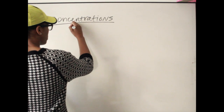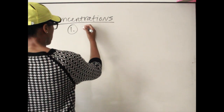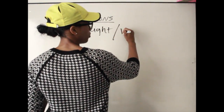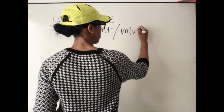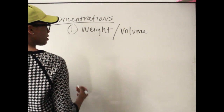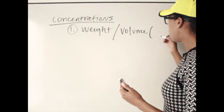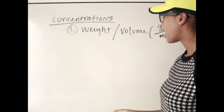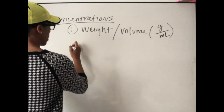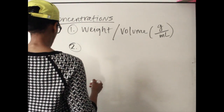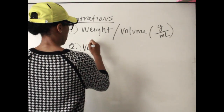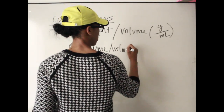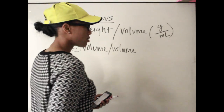One way would be weight to volume. An example of weight to volume would be grams over milliliters. The second way that a concentration can be expressed would be volume to volume. An example of volume to volume would be milliliters to milliliters.